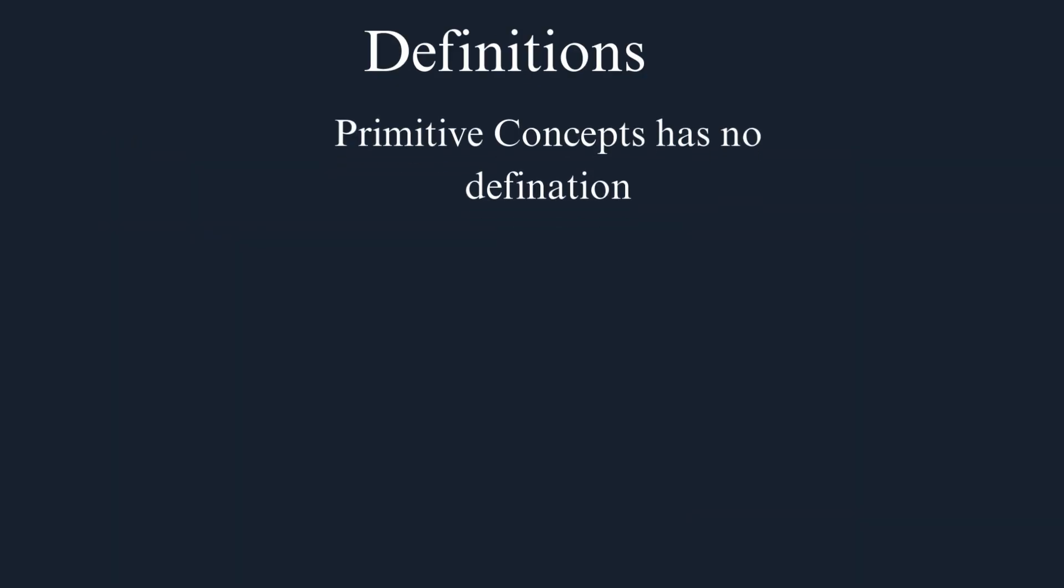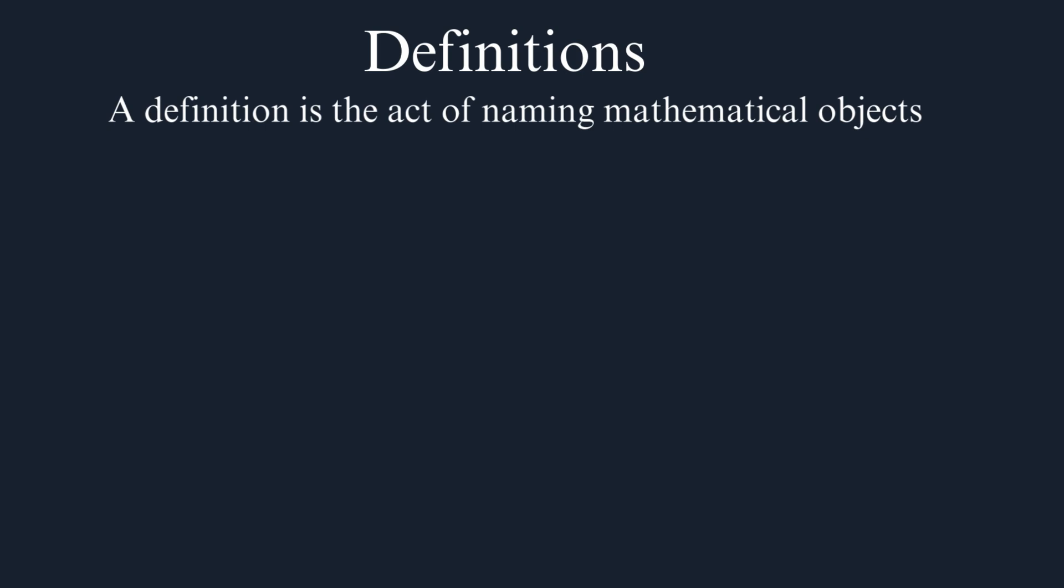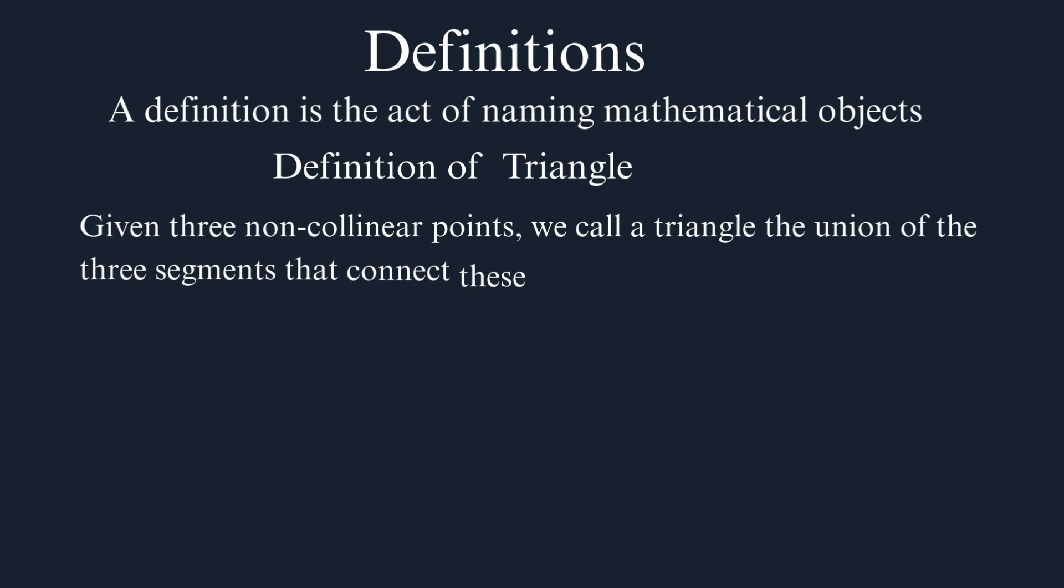Definition. Since these mathematical objects have no definition, let's understand what a definition is. A definition is the act of naming mathematical objects. It's the act of creating a mathematical object. For example, what's the definition of a triangle? It's as follows: Given three non-collinear points, we call a triangle the union of the three segments that connect these points and have them as endpoints. Notice that this definition creates the mathematical object triangle.